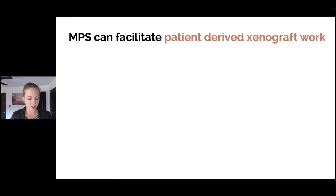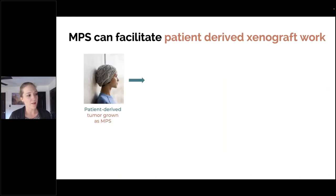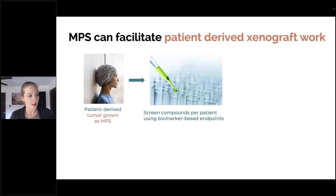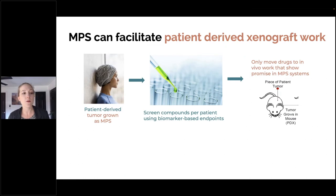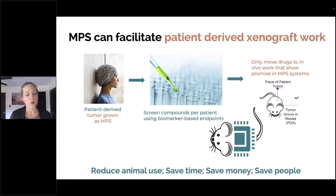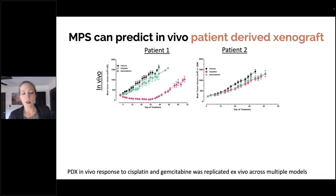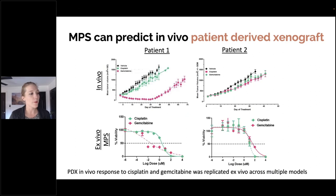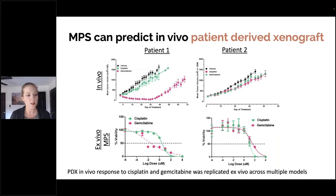MPS can also facilitate patient-derived xenograft work. You can have a patient-derived tumor grown as an MPS, screen compounds per patient, and only move drugs to in vivo work that show promise in MPS systems. In this way, you can really help reduce animal use, save time, save money, and save people. Graphs comparing patient-derived xenograft ex vivo MPS and in vivo show that the in vivo response was replicated ex vivo for MPS across multiple models.